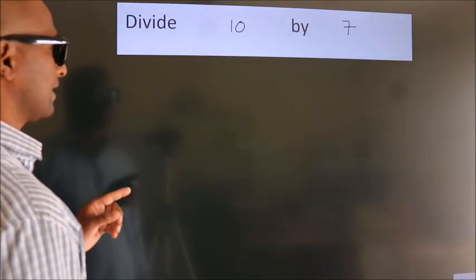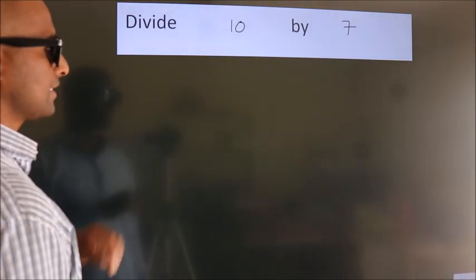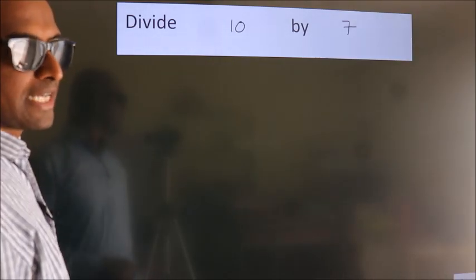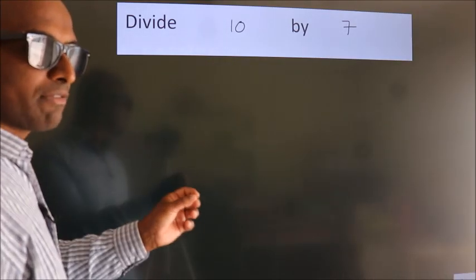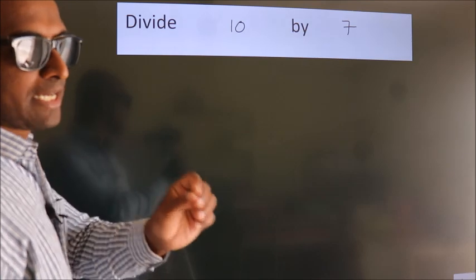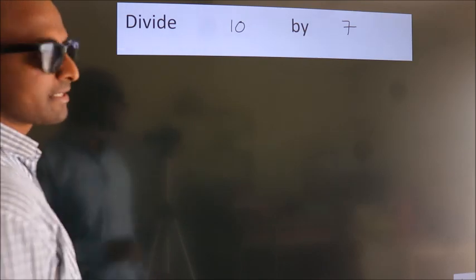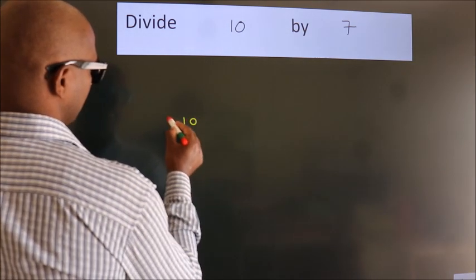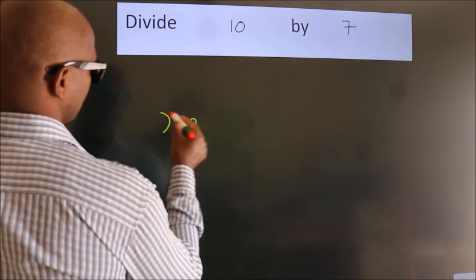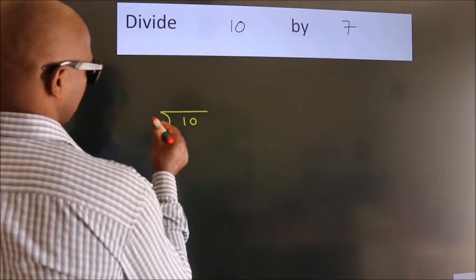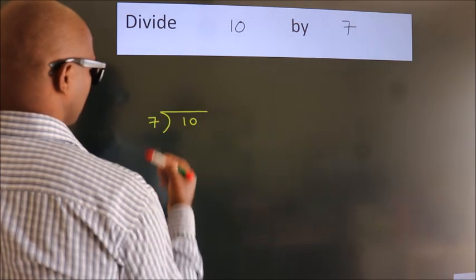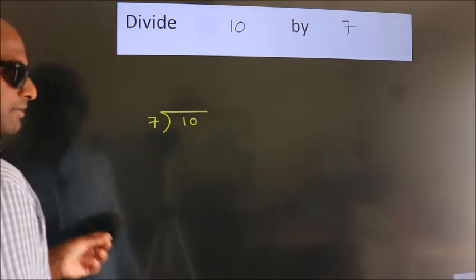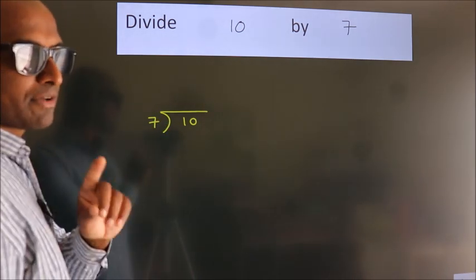Divide 10 by 7. To do this division, we should frame it in this way: 10 here, 7 here. This is your step 1.